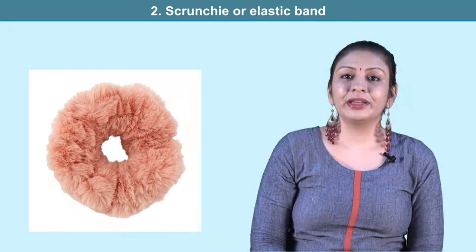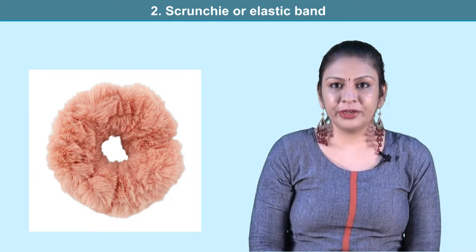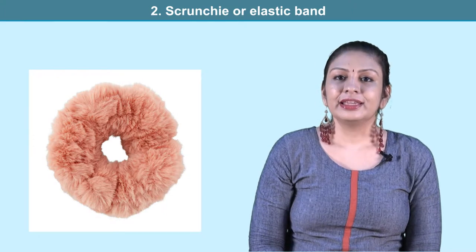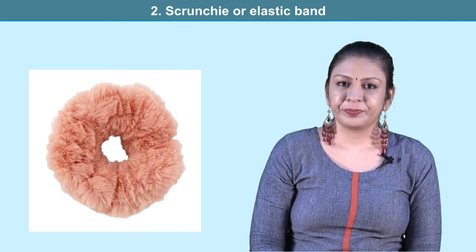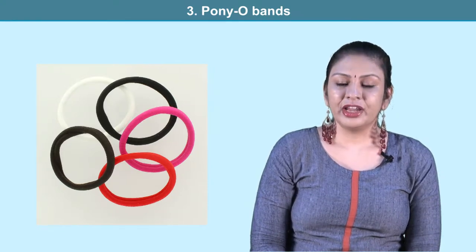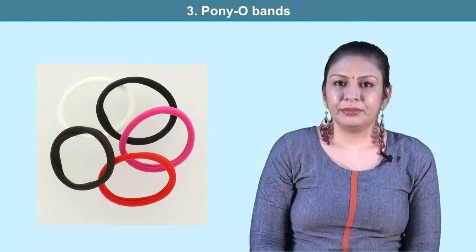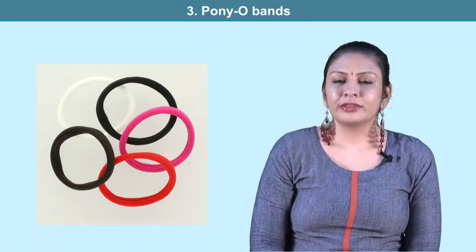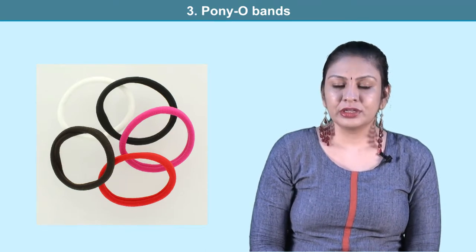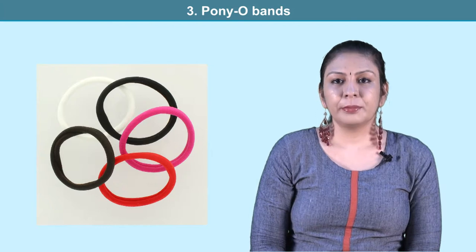Scrunchies or elastic bands are most commonly used in tropical countries to keep hair off the neck. They can be made of fabric or elasticated bands and used to tie hair into ponytails or to secure braids. Ponyo bands, though a trademark name, refer to an elasticated band with a metal ring or crimp tube in the center, typically used to retain hair in the form of a ponytail or a braid. They can also be used to create buns, knots and chignons.